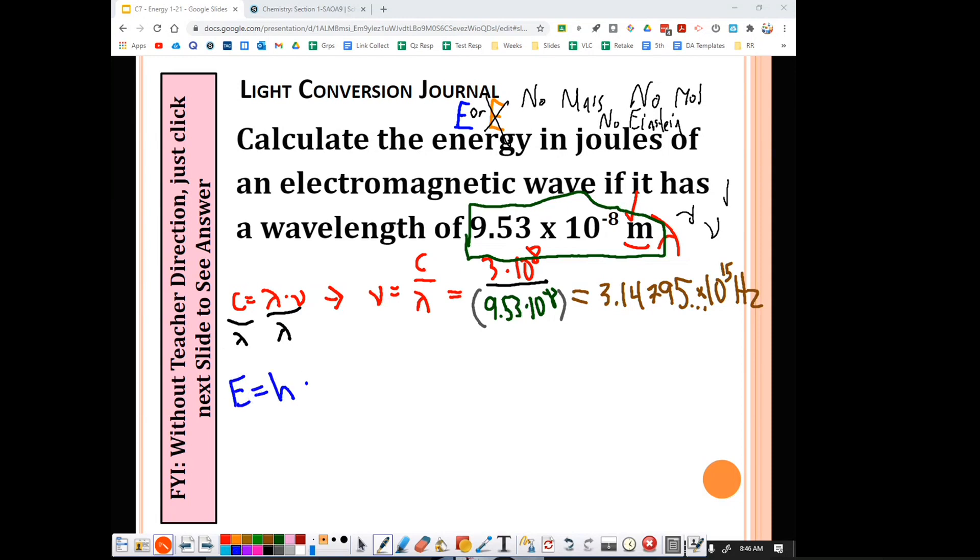Planck is E equals HV. We can use this exactly as it is because we have H and we have V. So I continue. H is Planck's constant, which is 6.626 times 10 to the negative 34th power. And that is going to be times the frequency that we calculated earlier, 3.14795 times 10 to the 15th power.